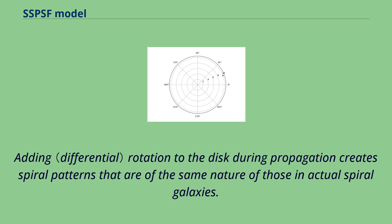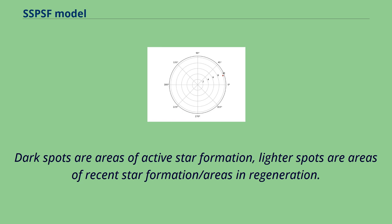Adding differential rotation to the disk during propagation creates spiral patterns that are of the same nature of those in actual spiral galaxies. Dark spots are areas of active star formation, lighter spots are areas of recent star formation or areas in regeneration.